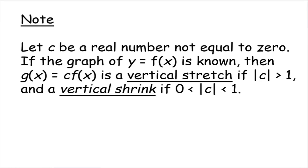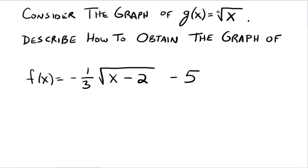Okay, so here's an example. Consider the graph of g of x equals the square root of x. We want to describe how to obtain the graph of f of x equals negative 1 third times the square root of x minus 2 and then minus 5. So kind of look what's going on here. We've got x minus 2.